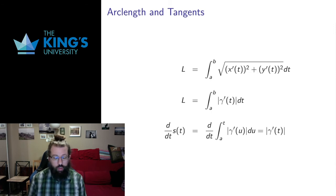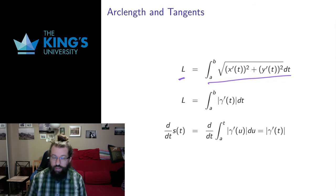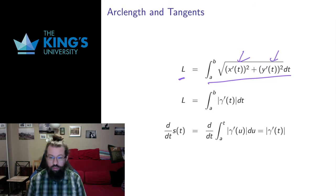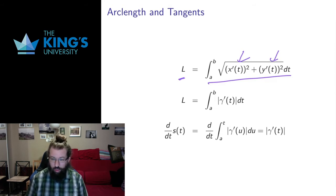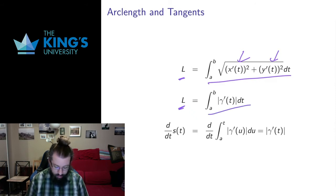There's also a really nice connection between what we did last week with arc lengths and tangents. In R2, the arc length of a curve was this integral. If we look at this, the derivatives of the coordinates of the curve are the coordinates of the tangent vector. And the square root of the sum of squares of coordinates is just the length of the vector. So the length of a curve is actually the integral of the length of the tangent vector.